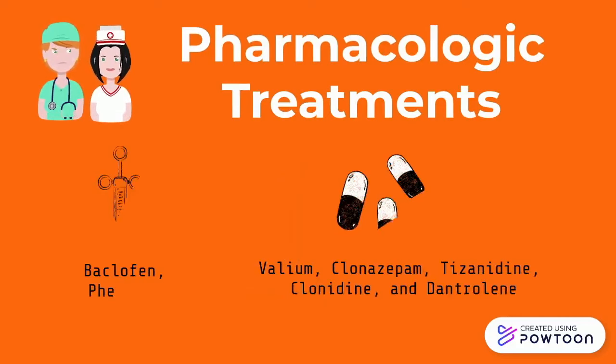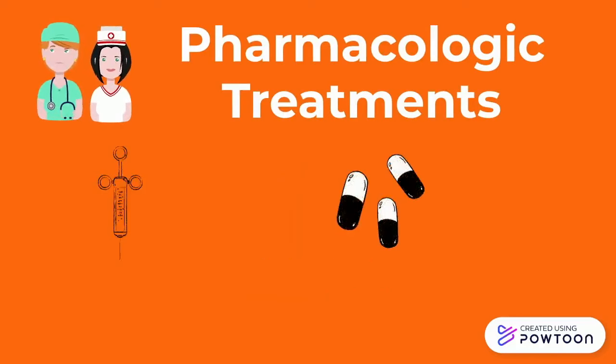There are also other medications like baclofen, intramuscular phenol shots, valium, clonazepam, tizanidine, clonidine, and dantrolene that can be used to help with spasticity. These medicines come in different forms like pills or injections, and they can be beneficial for managing muscle tightness.